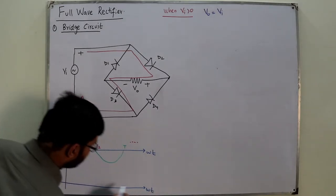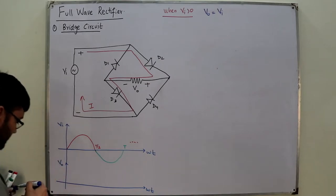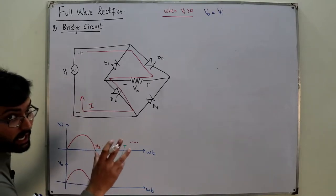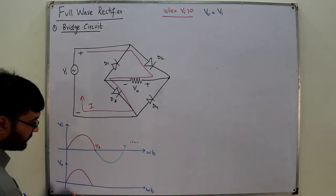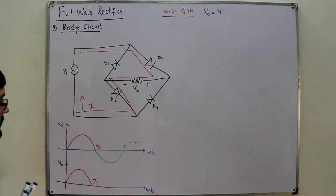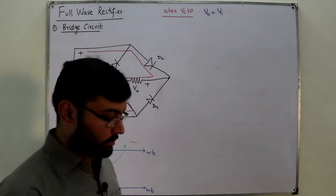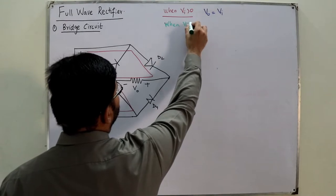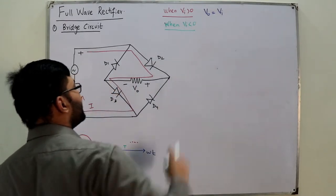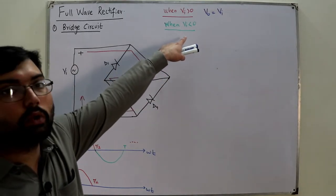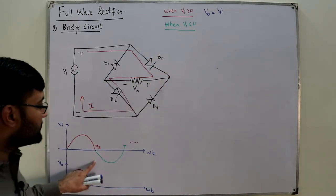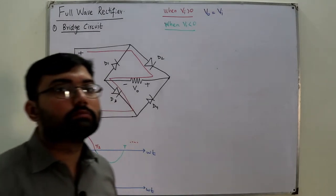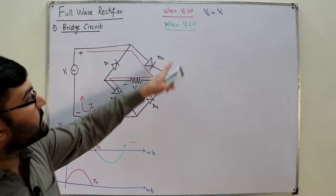On the output axis, from 0 to T/2 the output has been copied from the input — considering ideal diodes throughout this discussion. Now for case 2: when the input voltage is less than zero — the negative cycle. When you state that input voltage is less than zero, you do not need to change the polarities of the circuit.